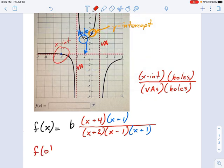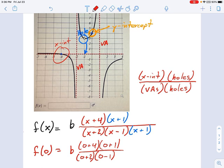So when x equals 0, I'm going to get this. 0 plus 4, 0 plus 1, all divided by 0 plus 2, 0 minus 1, 0 plus 1. And that whole thing has to be equal to 4, because that is the y-intercept.